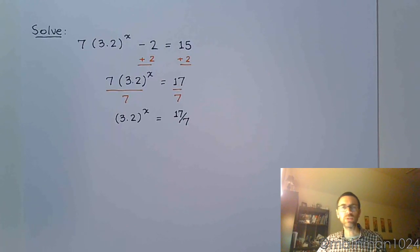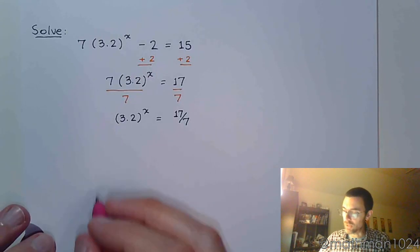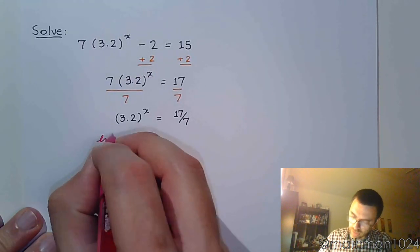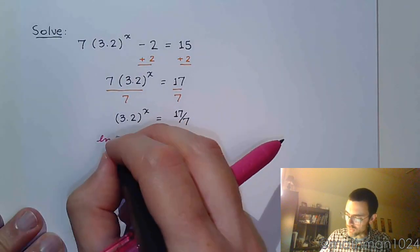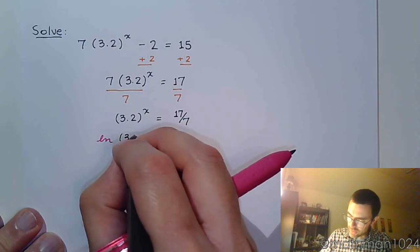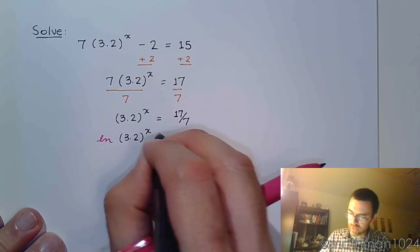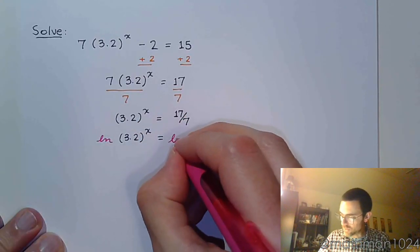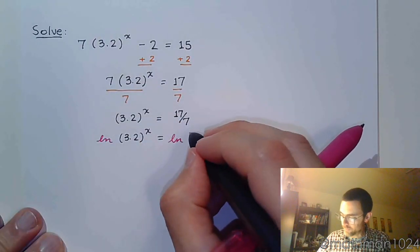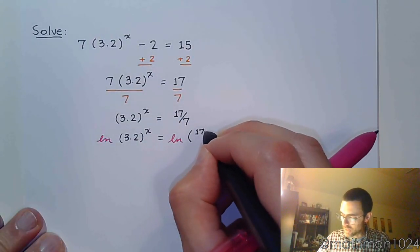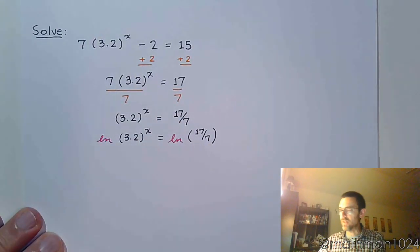So I could use common log or natural log. It doesn't really matter. Like I said, I tend to gravitate towards using the natural log. So let's see, we've got the natural log of 3.2 to the x, and then we have the natural log of 17 sevenths.